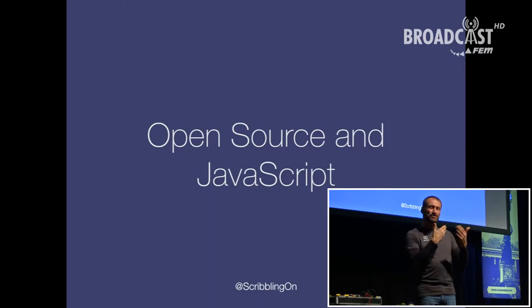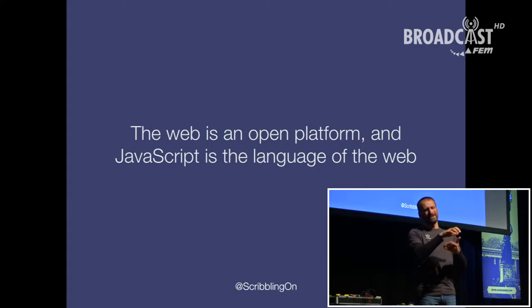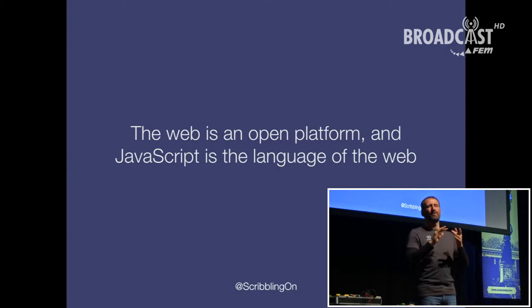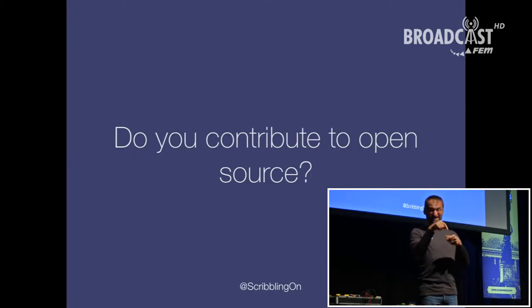Let's begin by talking about the relationship between JavaScript and open source. Open source is pretty much the backbone of the JavaScript ecosystem as we know it today. What enables it is the fact that the web is an open platform to develop for — it's not controlled by a particular corporation which decides its direction. It's up to us, the community, to push it forward. The majority of the tooling right now is open source, and all companies, big or small, depend on it to run their businesses every single day. And that's huge.